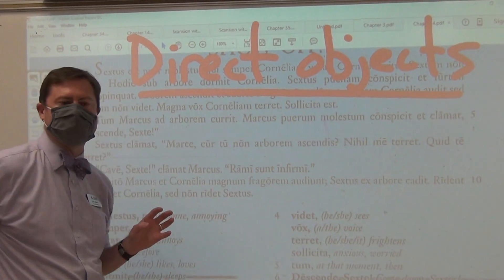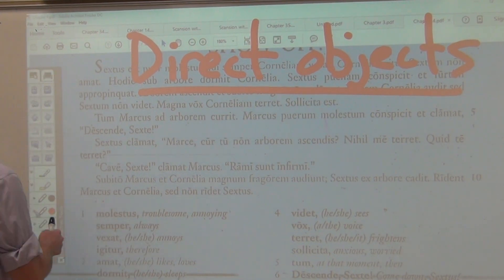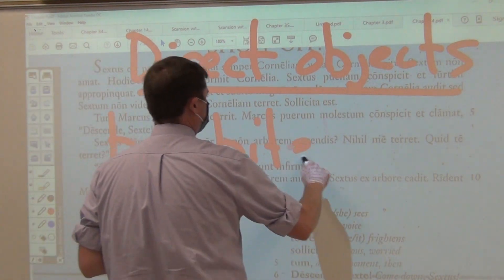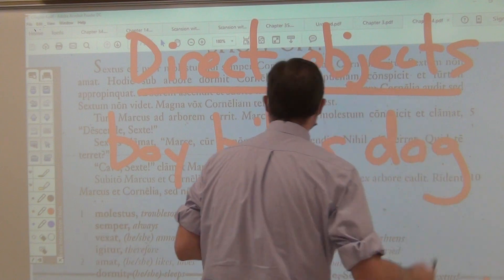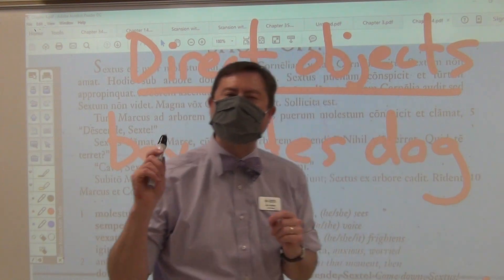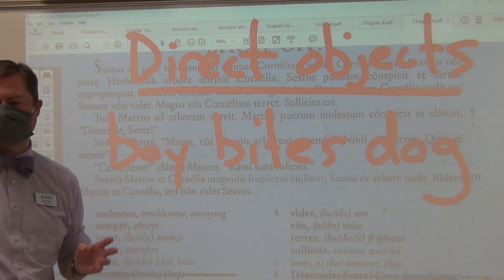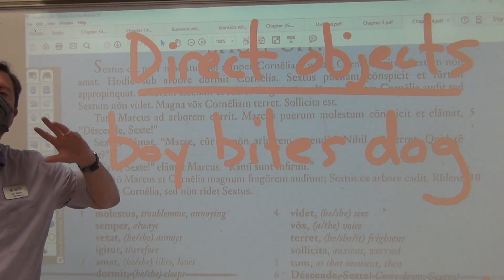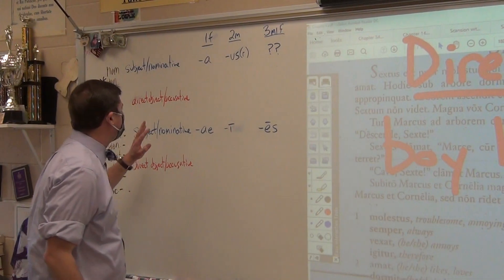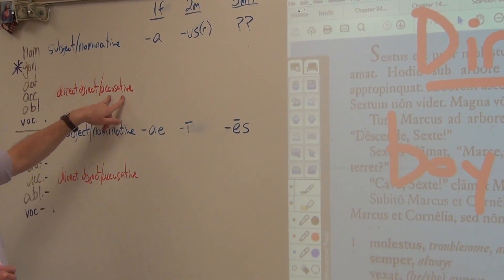Now in English, you usually know what the subject and the direct object is because of word order. So if you want to say 'boy bites dog,' you know that boy is the subject doing the biting, and dog is the direct object receiving the biting. But in Latin, it does not matter. Instead, what does matter is the form of the word, not the word order. So if we look over here, there's a new form that is used for the direct object, and we call it the accusative.